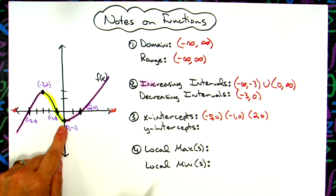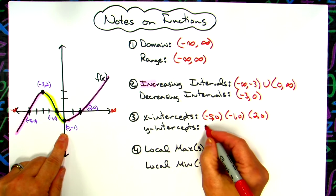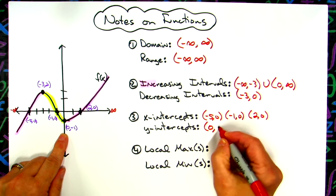There is only one y-intercept. It crosses the y-axis in one and only one spot. So that's 0, negative 1.